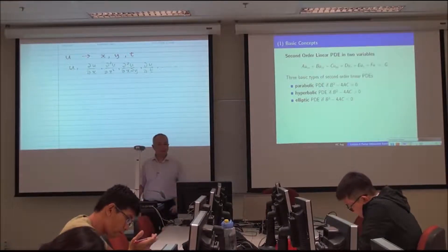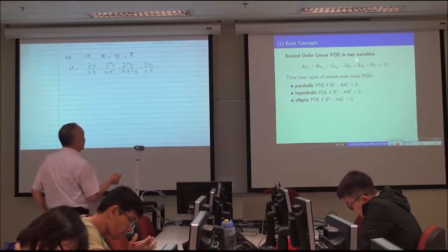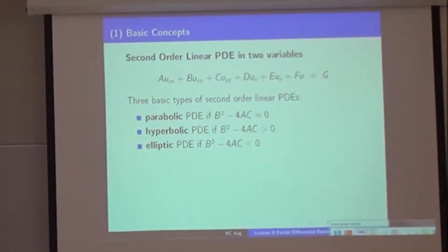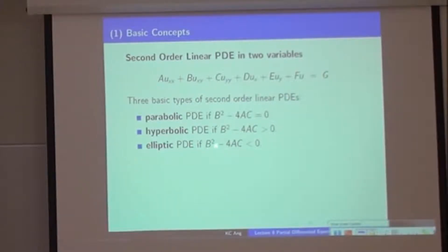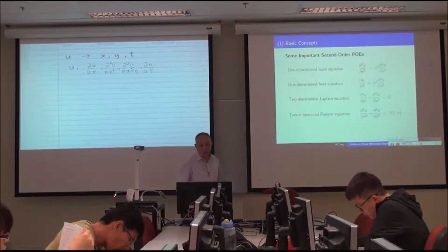We can further classify the second order linear PDE into three types. The three basic types are parabolic, hyperbolic, and elliptic. A second order linear PDE is parabolic if B² − 4AC = 0, hyperbolic if B² − 4AC > 0, and elliptic if B² − 4AC < 0. These are just the names for these equations — it sounds familiar but it has nothing to do with the discriminant of a quadratic.